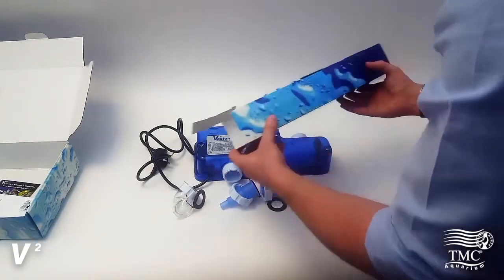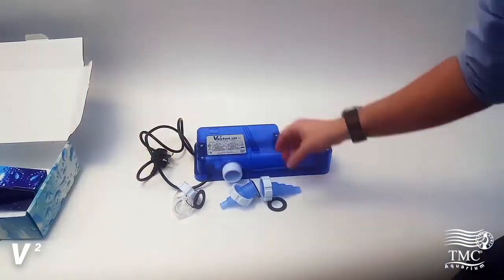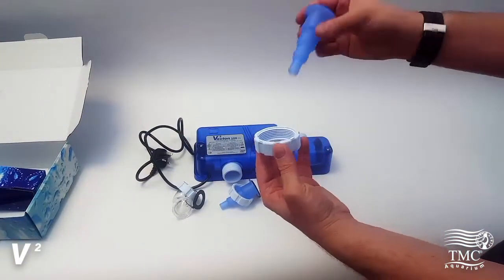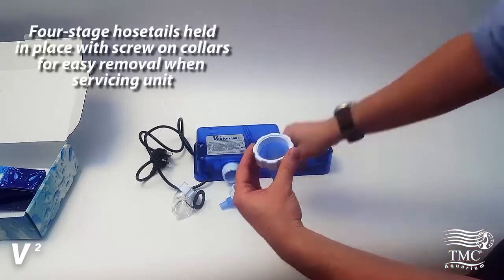In the box you'll find multi-stage hose tails and also an elbow to help you get the right position for your pipe work. The hose tails can be cut down to the appropriate pipe size.